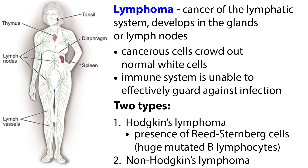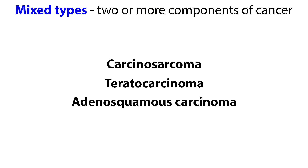Lymphoma is cancer of the lymphatic system and develops in the glands or lymph nodes. There are two types: Hodgkin's lymphoma and non-Hodgkin's lymphoma. The cancerous cells of Hodgkin's lymphoma crowd out normal white cells, and the immune system is unable to effectively guard against infection. The difference between the two types is determined during a biopsy of a lymph node. The presence of Reed-Sternberg cells, which are huge mutated B lymphocytes, distinguishes Hodgkin's lymphoma from non-Hodgkin's lymphoma. Mixed types of cancers have two or more components, such as carcinosarcoma or teratocarcinoma.